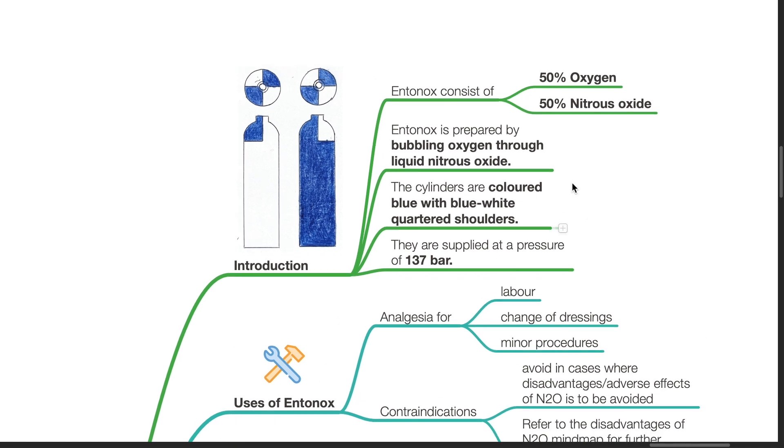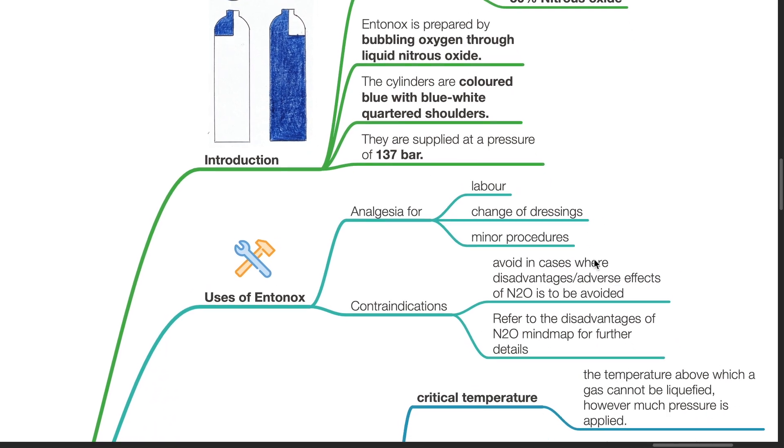Entonox is prepared by bubbling oxygen through liquid nitrous oxide. The cylinders are colored blue with blue-white quartered shoulders. They are supplied at a pressure of 137 bar.